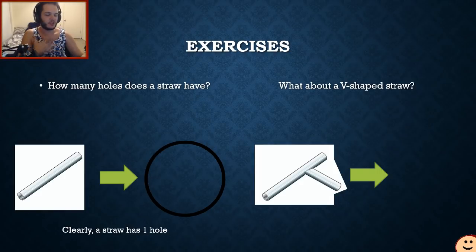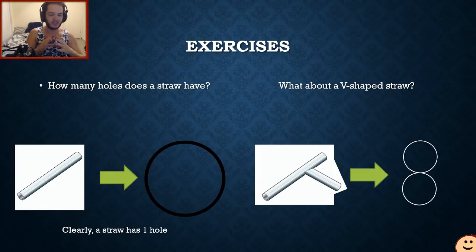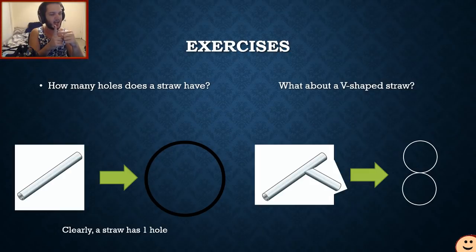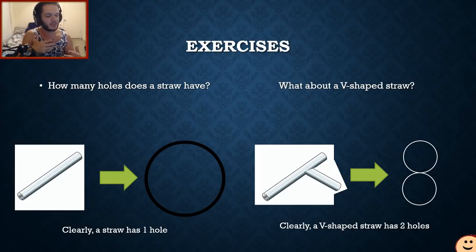If you shrink down this V-shaped straw into the very bare minimum, what you get is a figure eight. A better way to imagine it: the one tube on the side creates a hole in the side of the straw. We already established the straw has one hole, and the added tube creates a hole in the side, so that means it has two holes. A V-shaped straw clearly has two holes.